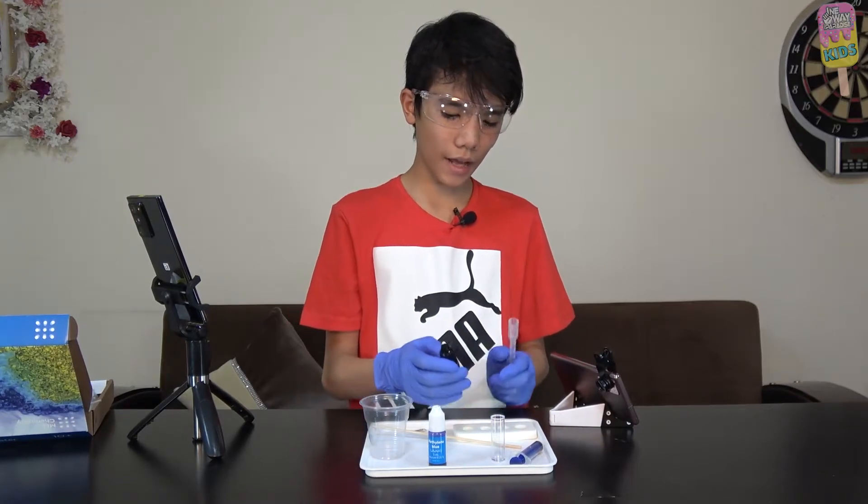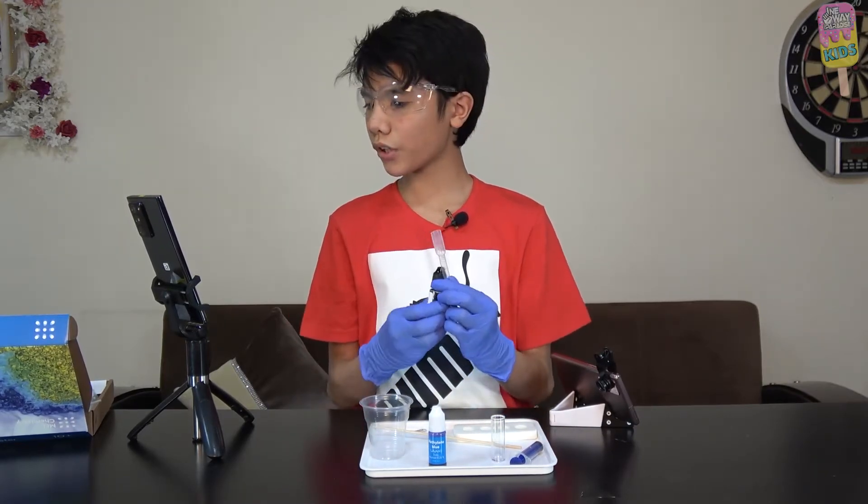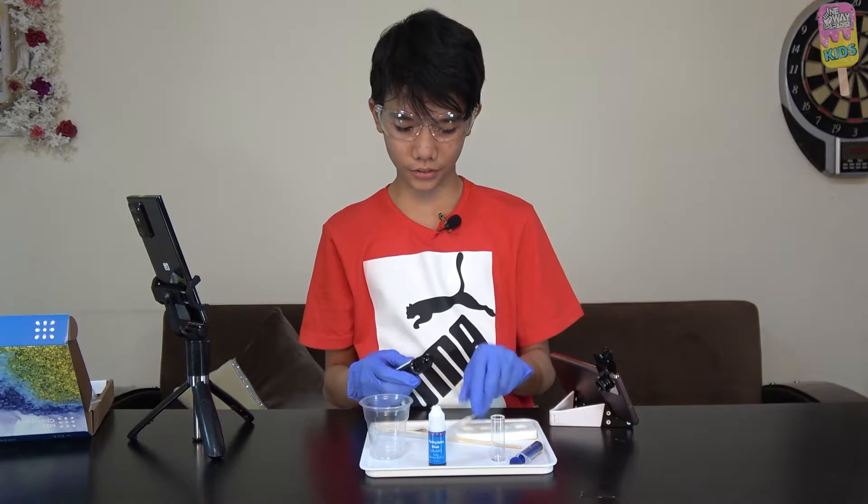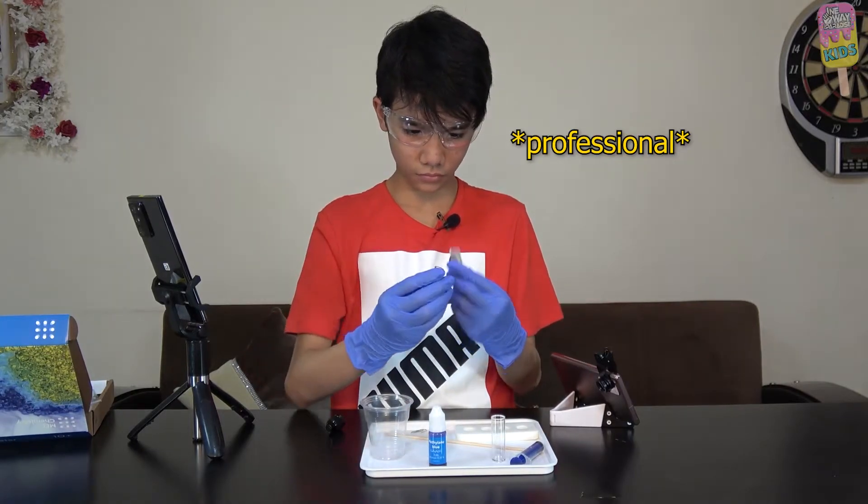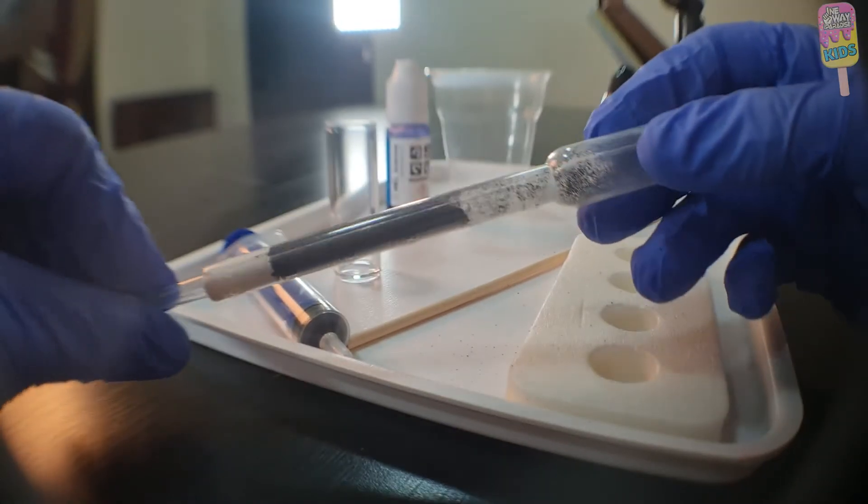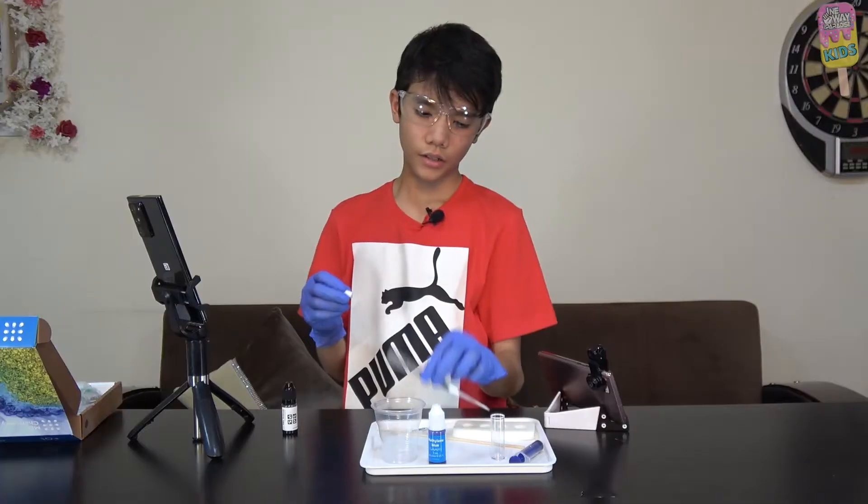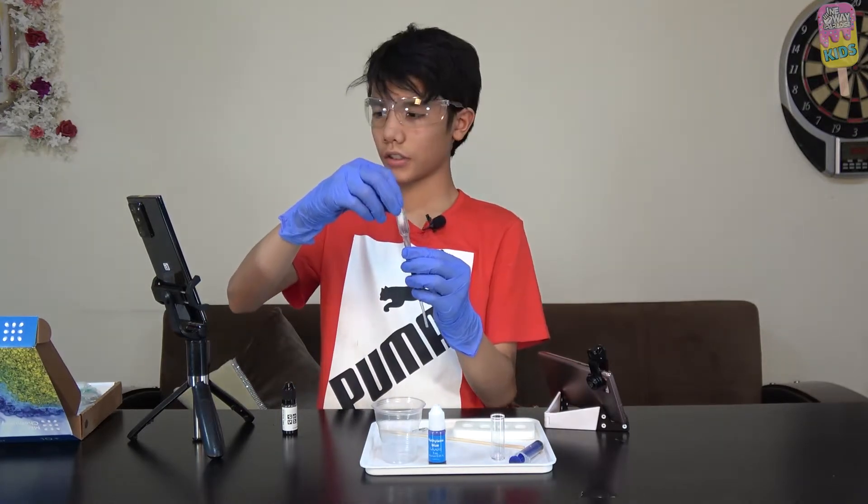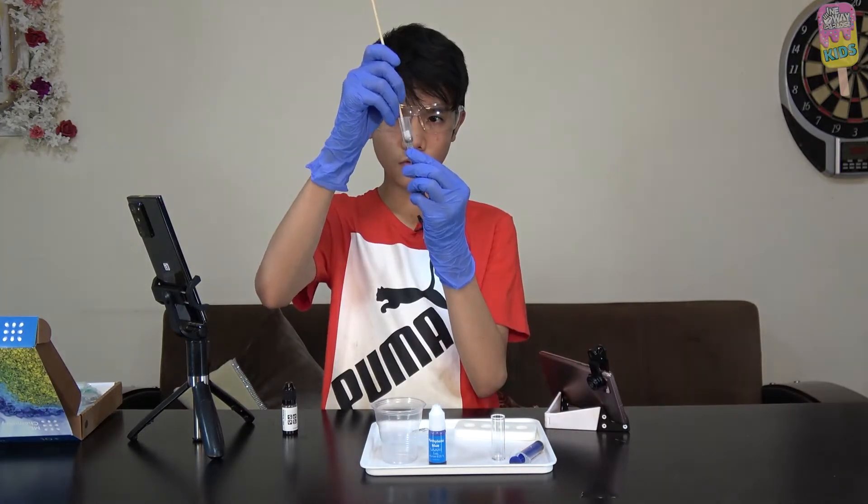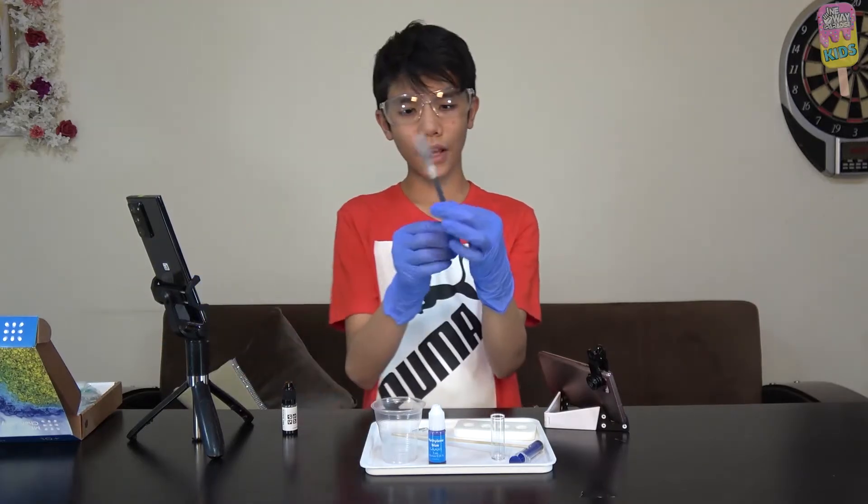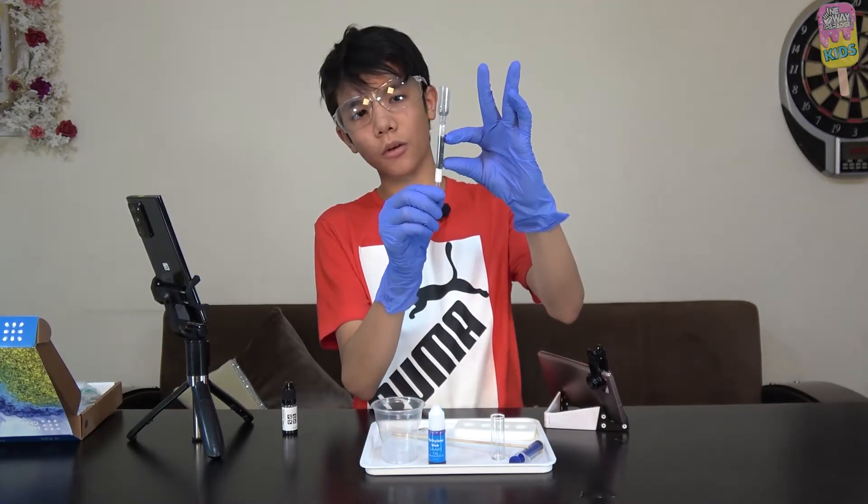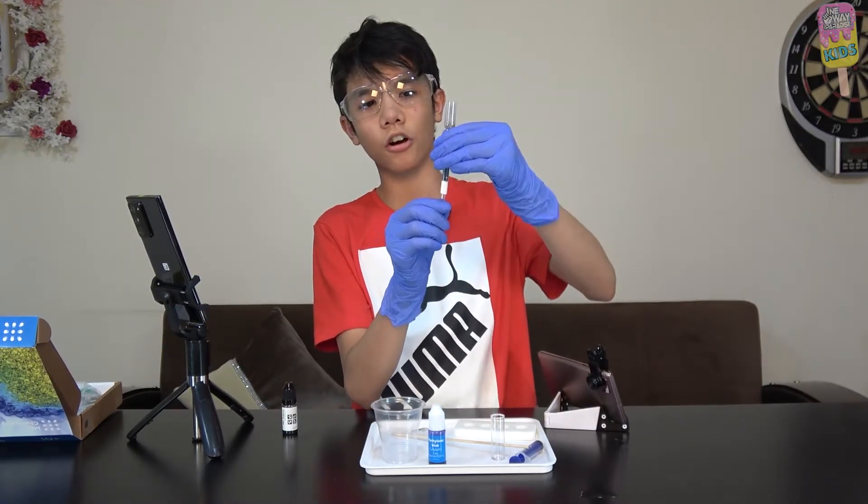Next, we're going to get some activated carbon and pour it up to the 2.5 mark. There, I filled some activated carbon up to the 2.5 mark in the pipette. Next, I'm going to insert another cotton cylinder. Now we have a cotton cylinder, some activated carbon in the middle, and another cotton cylinder on top.